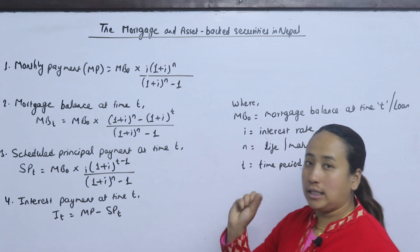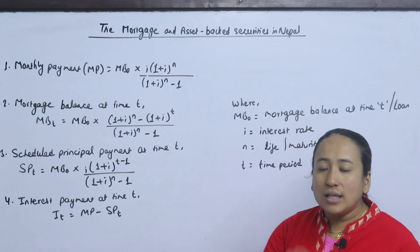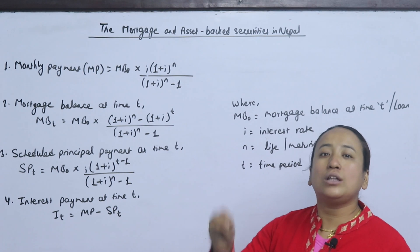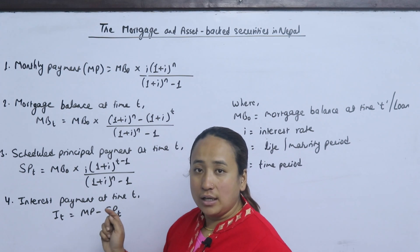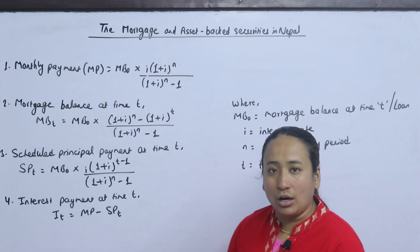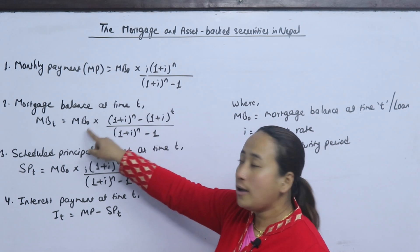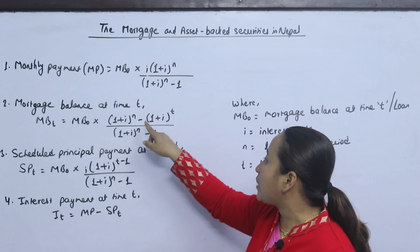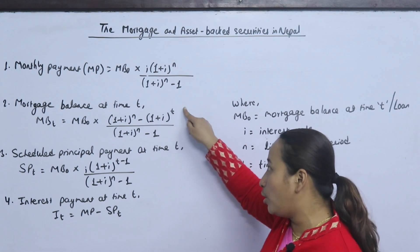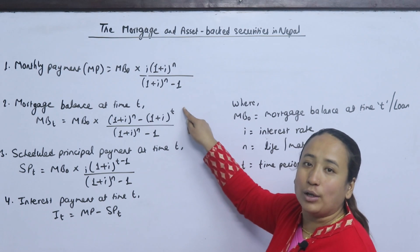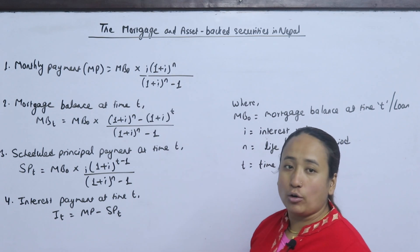The mortgage balance at time t is the remaining balance after t months of payments. For example, if we take a loan for 5 months and want to know the balance at 3 months, we calculate the mortgage balance at time t. The formula is: MB_t = MB0 multiplied by (1 plus i to the power n minus 1 plus i to the power t), divided by (1 plus i to the power n minus 1). Here n is the total life of the loan. For instance, if n is 300 months and t is 200 months, this formula gives the remaining balance.